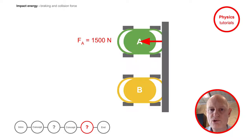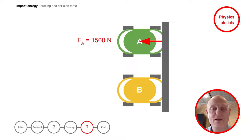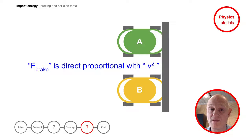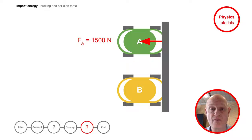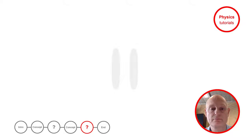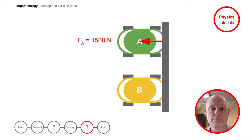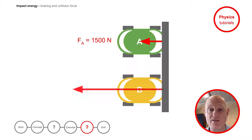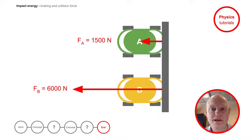How is the impact force related to the velocity? The braking force is directly proportional with the velocity squared. What is the impact force on the driver of car B? The impact force on the driver of car B is 4 times bigger. In fact, the impact force is 6000 newtons. You are now able to explain the physics of a collision at high speed and calculate the braking or collision force.